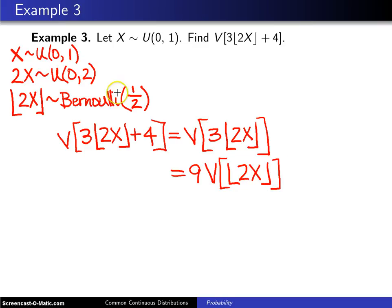Now at this point, you come up here and recognize that the floor of 2X is the same as a Bernoulli 1 half random variable, and if you go back to the Bernoulli distribution, you will remember that the variance of a Bernoulli is p times 1 minus p.